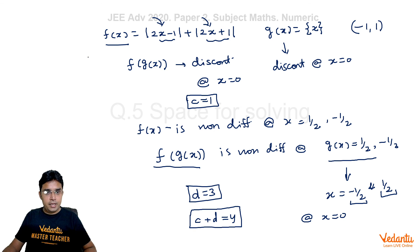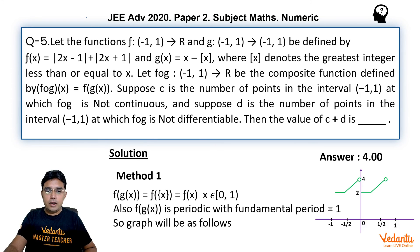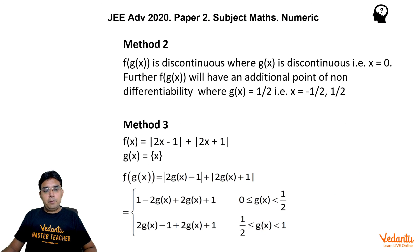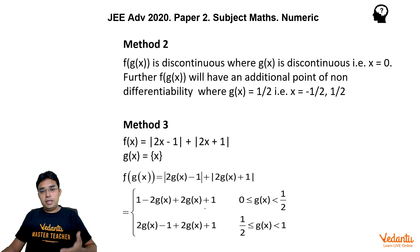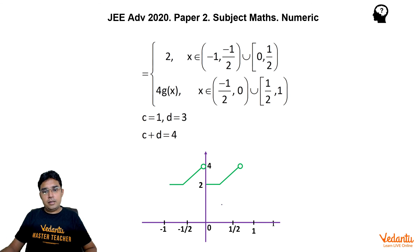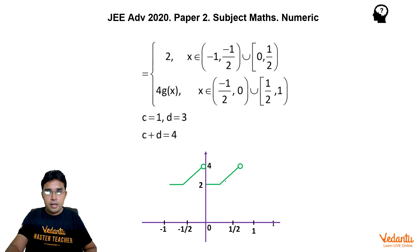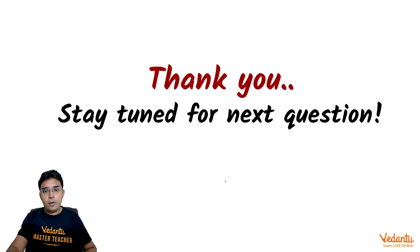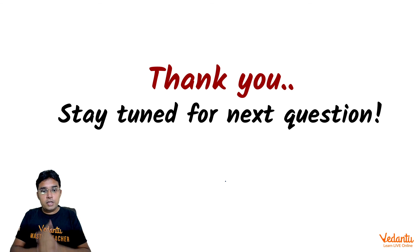We can also solve this a third way by computing fog completely without using the periodicity of g(x). It is a bit lengthier, but you get the same graph and the same answer. So that is all about this question. I hope you have liked this solution. Thank you so much and stay tuned for the next question. Bye.